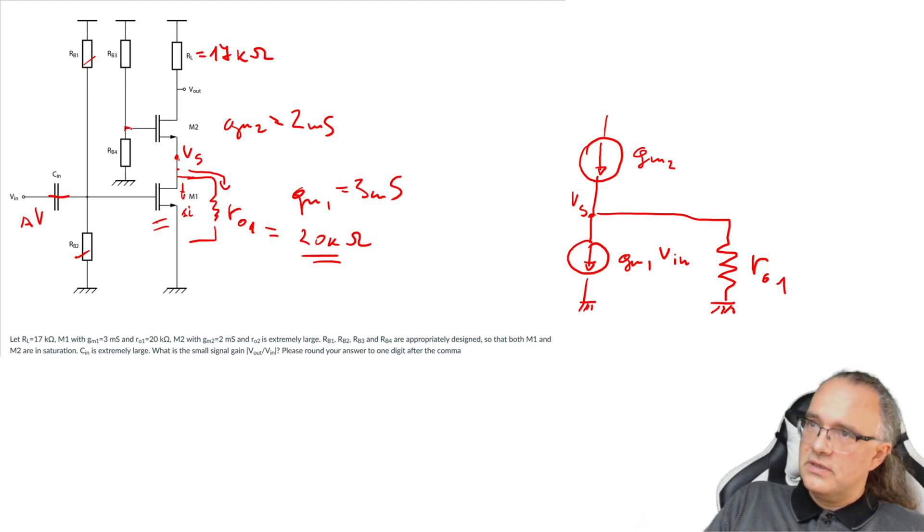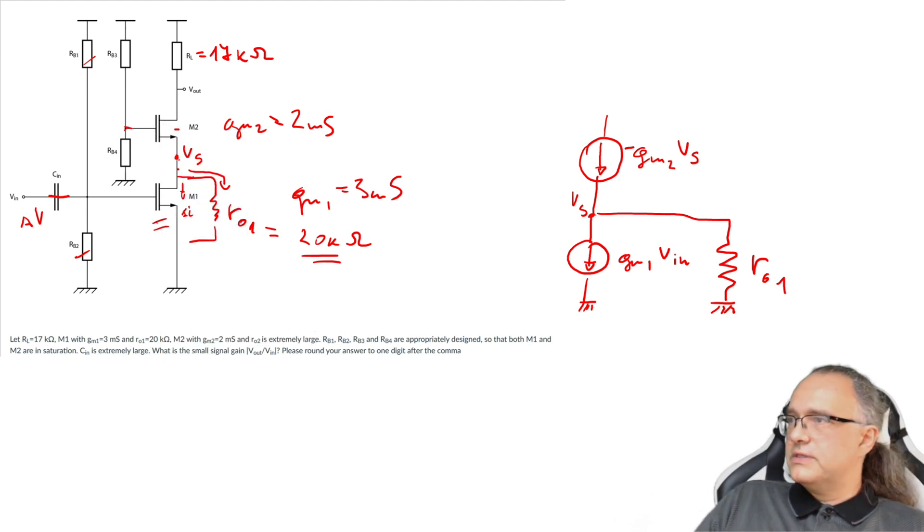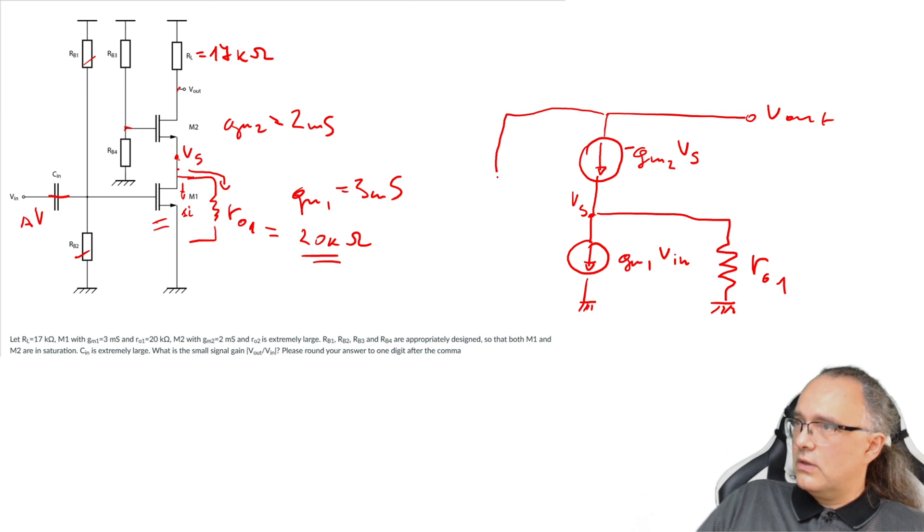V gate here. I don't have a signal component so it is ground zero and V gate minus Vs. So this will be then minus Vs. Now there is a body effect but the assignment says nothing about body effect so I ignore the body effect. Then this is the node Vout. So this is the drain. From here to Vdd I have the load resistor which is 17 kΩ. Vdd is small signal ground so there is no signal component there so I have to draw then this resistor R load to ground.